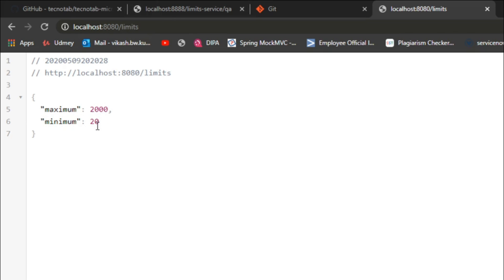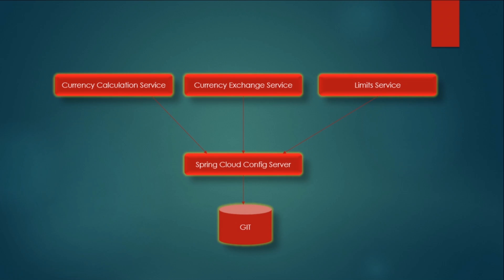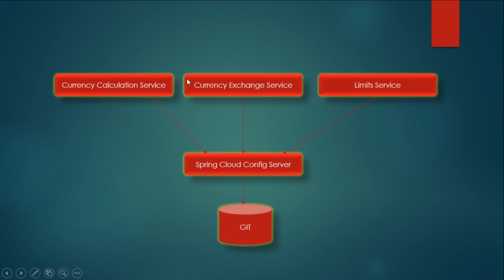We will learn how to set the profile in the future. Let's review what we have done: we created a limit service with maximum and minimum values, first provided through application.properties. Then we created a Spring Cloud Config Server and a Git repository where we store all our properties. Ultimately, we are picking all the properties from Git through the Spring Cloud Config Server. In the future we will create a currency exchange microservice and a currency calculation microservice.